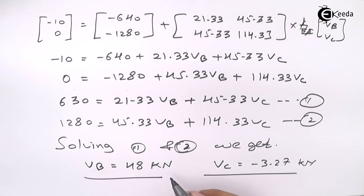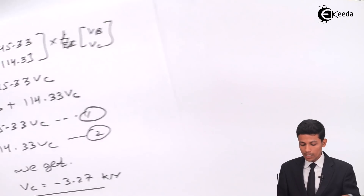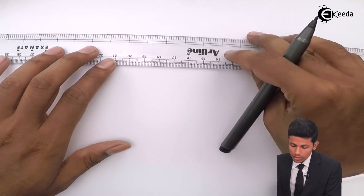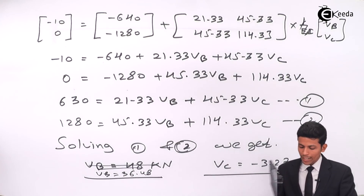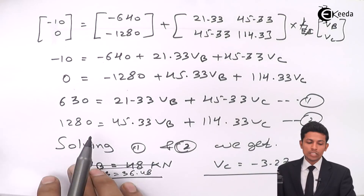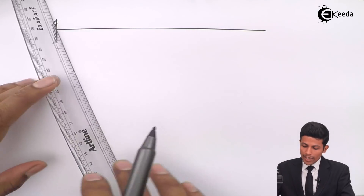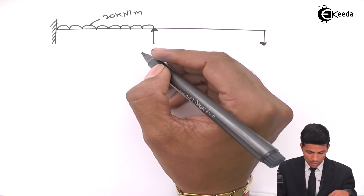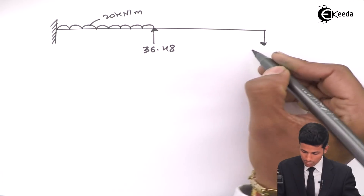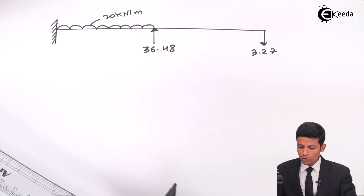Note: there is a correction here — solving equations 1 and 2, VB = 36.48 kN (positive) and VC = 3.27 kN. Drawing the diagram again with these values: VB = 36.48 kN and VC = 3.27 kN.